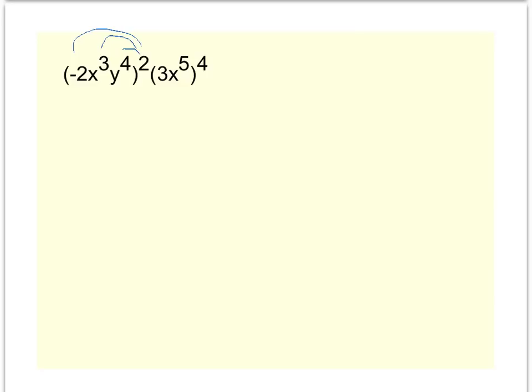So that 2 is going to have to distribute with the 2, the x, and the y. And then in my second term, the 3x to the 5th raised to the 4th, that exponent of 4 is going to have to attach or multiply or distribute with everything in the second set of parentheses.